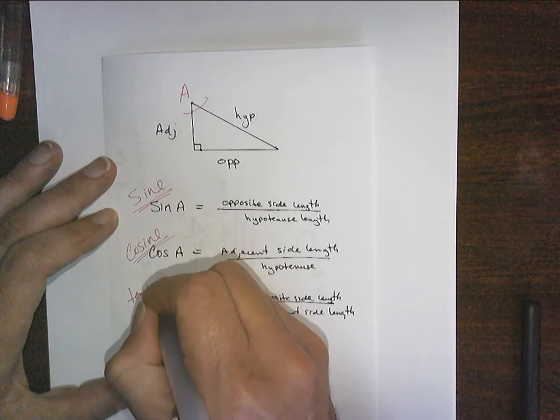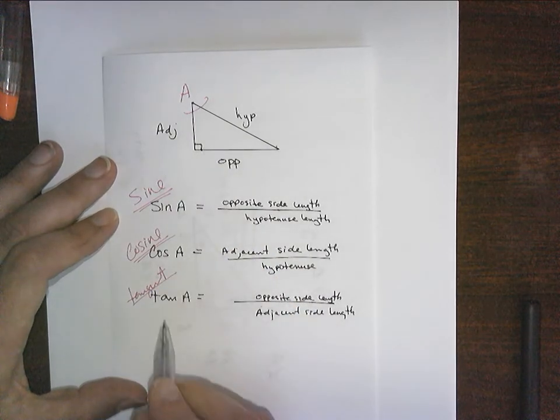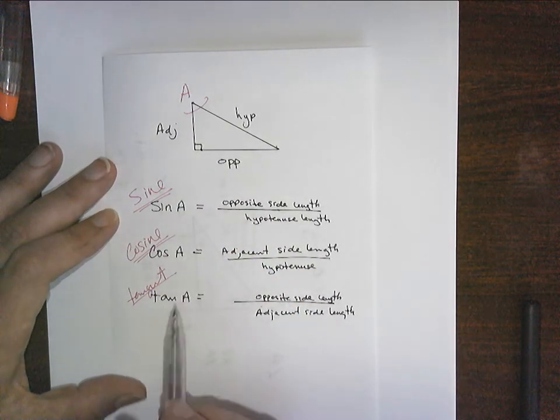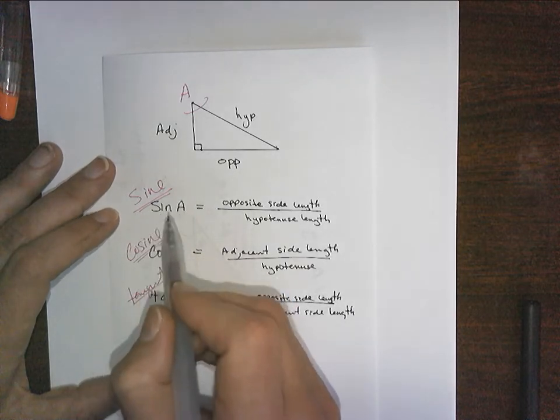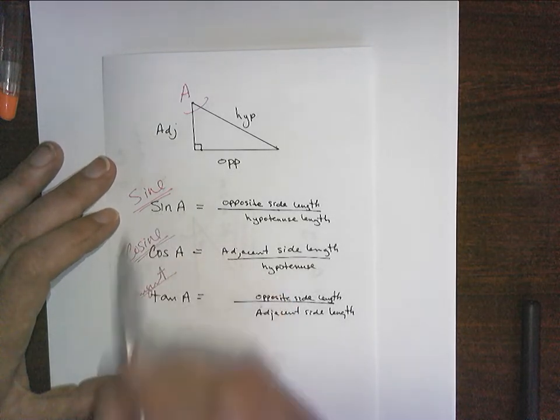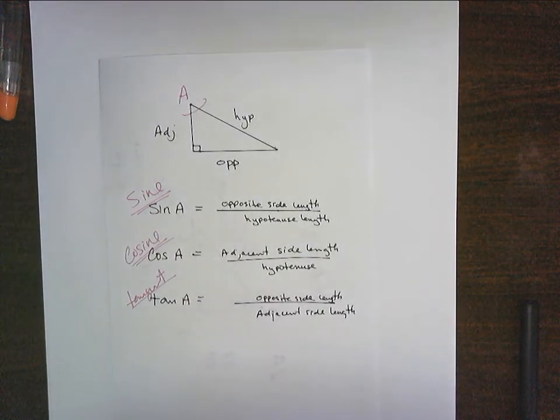And tangent is the proper way of saying tan. I will accept tan, I will accept cos, I will accept sine. I will not accept sin. Sin happens in religion class. Go there if you want to talk about it.